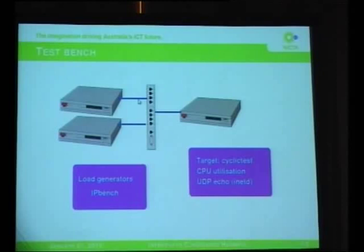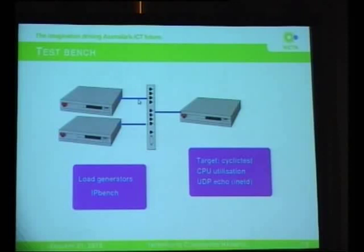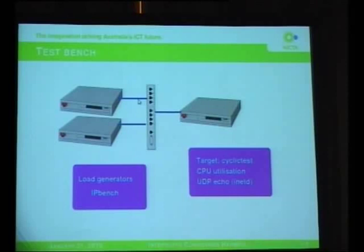These boxes were two gigahertz Celerons with 512K cache and E1000 Ethernet ports - not particularly modern or high-end machines, but adequate for this. Cyclic test is a real-time latency test program. It runs in real-time mode at a high priority - we set it up to have a higher priority than anything else on the system. It goes to sleep for a particular time, schedules a wake-up in the future, and when it wakes up, measures the time between when it should have woken up and when it actually woke up. From a real-time perspective, all I'm interested in is the maximum latency. On a good system, you should be able to wake up within a few microseconds.